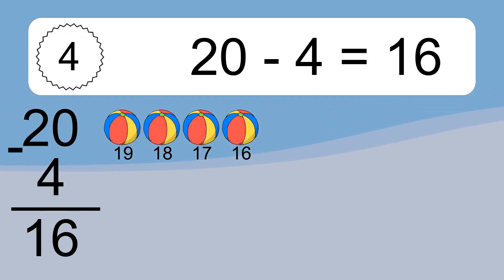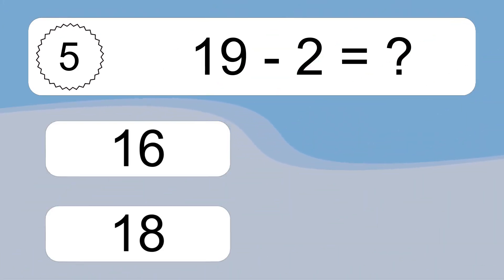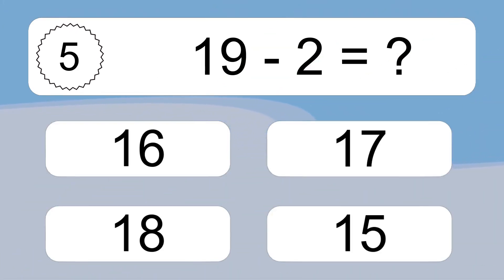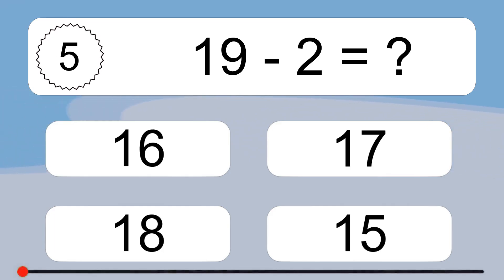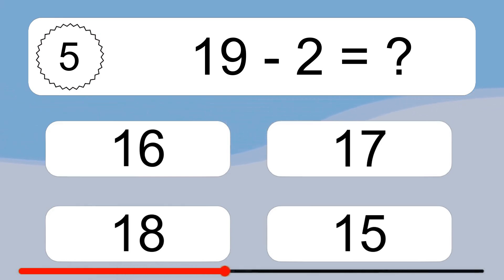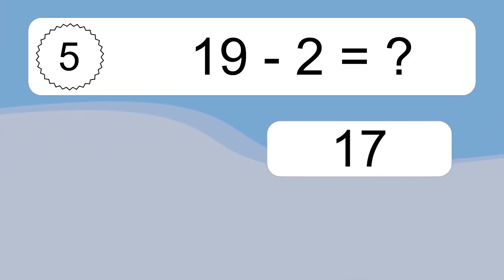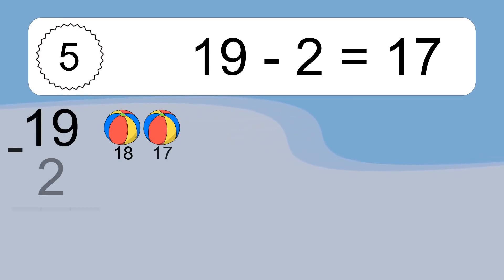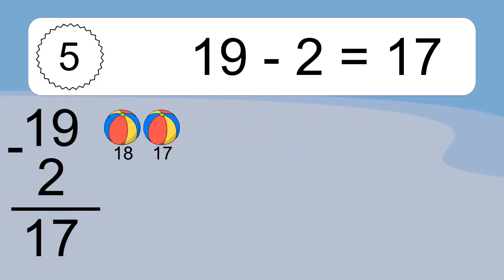19 minus 2 equals what? 19 minus 2 equals 17. Let's count it: 18, 17.